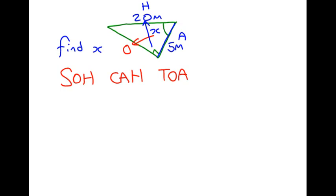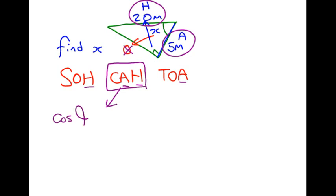In this case, we do not want O because there's nothing with O. We're not trying to find it and we don't have information on it. We have information on H and A. So the one that we want to use is the one with A and H, which is CAH, which reminds us of the formula cos theta equals adjacent over hypotenuse.